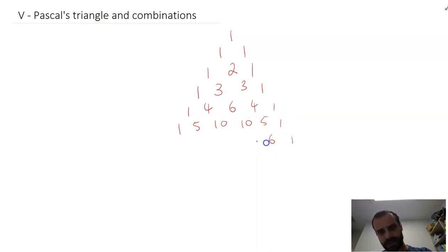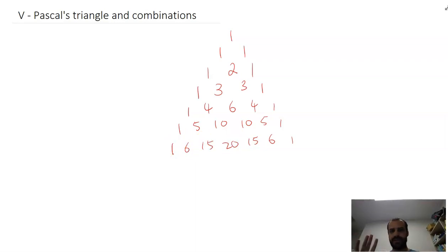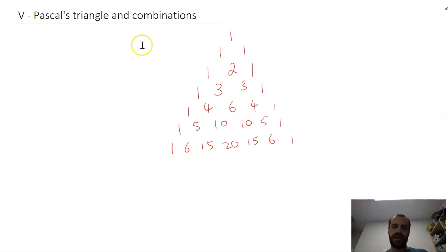One, six, fifteen, twenty, fifteen, six, one. This is Pascal's Triangle, and it's very, very useful for combinations and some other things as well.